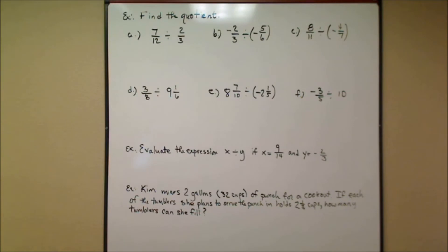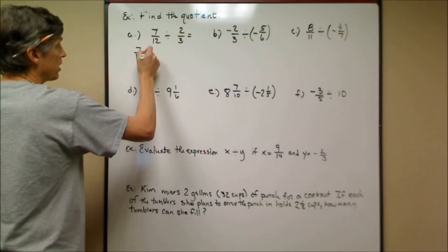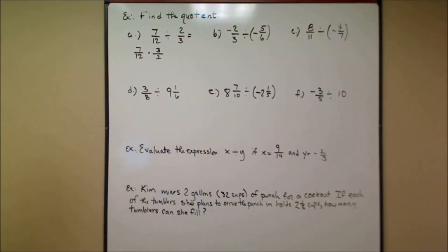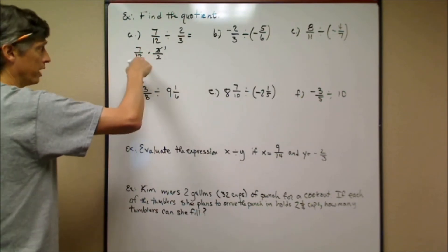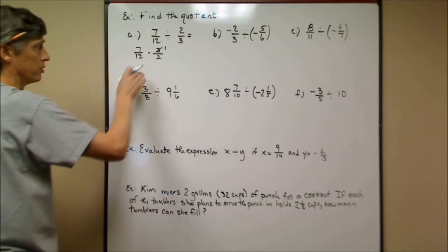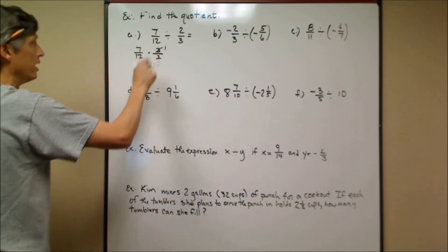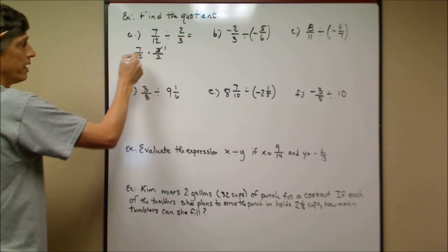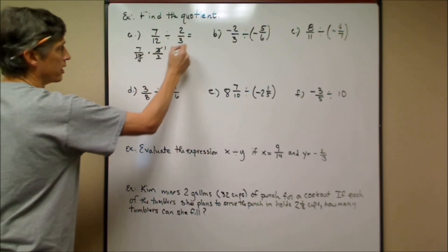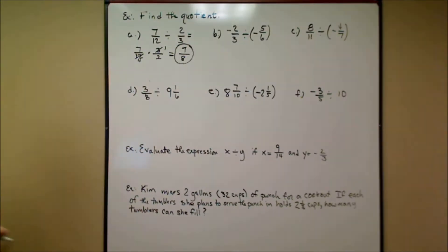Let's find the quotient. In the first example: 7/12 divided by 2/3. We rewrite this as 7/12 times the reciprocal of 2/3, which is 3/2. You can cross cancel only after it's written as a multiplication problem — the 3 and a 3 out of the 12 leaves a 4. That gives 7 times 1 on top and 4 times 2, which is 8, on the bottom. The answer is 7/8, already in simplest form.